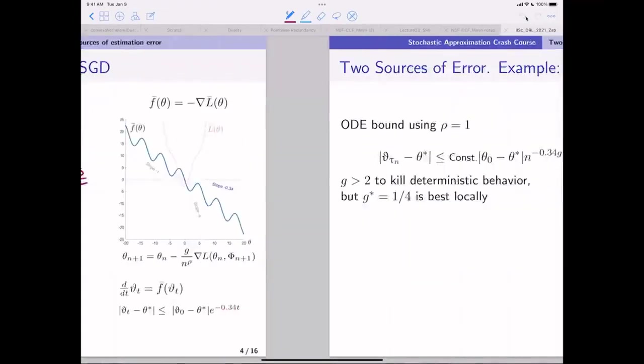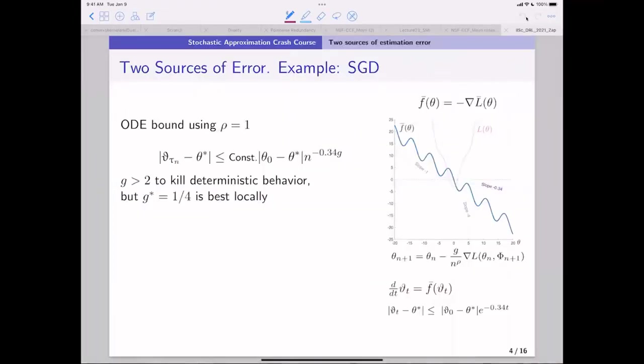And so there is the bias. If I don't make G large, I may have a big bias. So in fact, G bigger than two approximately, because I want to be able to make sure that the bias decays faster than one over the square root of N. But because the slope here is minus four, one over that is the best locally that minimizes the variance. So there's again, this tension.